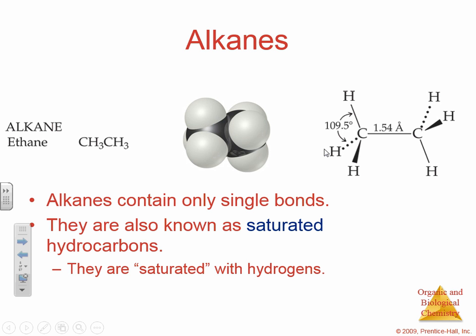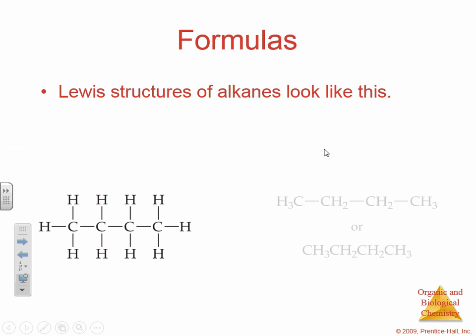Alkanes are known as saturated compounds because they have a maximum amount of hydrogens on them as possible. All the single bonds result in a saturated hydrocarbon. For example here, we have one, two, three, four carbons linked together.